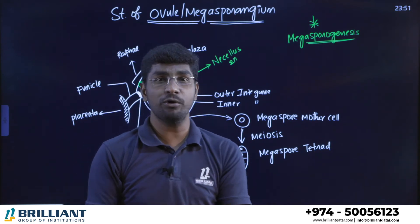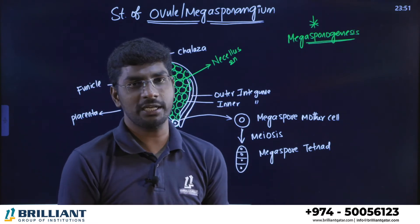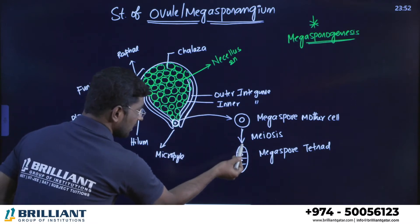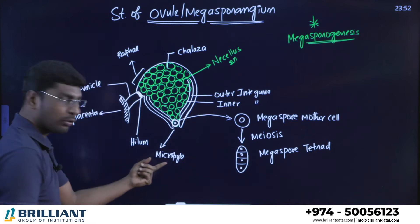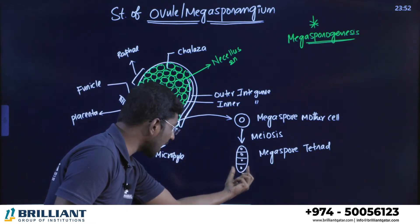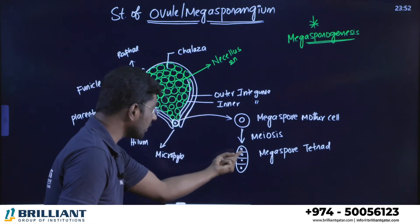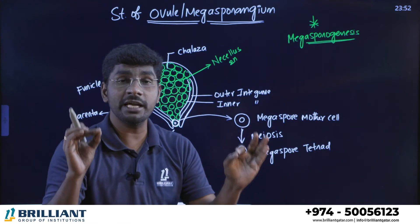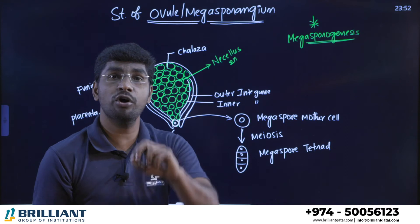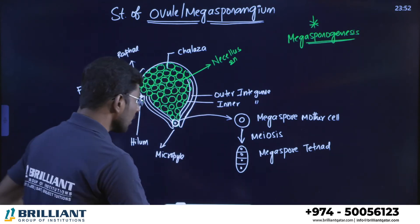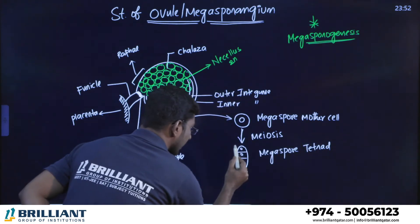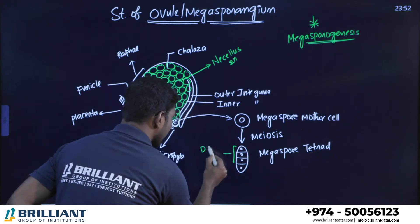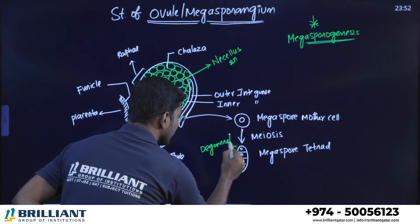Now a very important point: if you place this linear tetrad into the ovule structure, you'll see three cells are towards the chalazal end and one cell is towards the micropyle end. Out of the four haploid cells, three cells — those towards the micropyle end — start to degenerate.